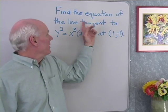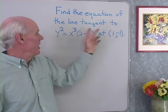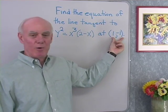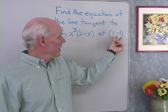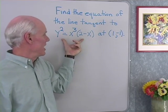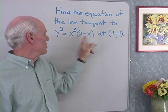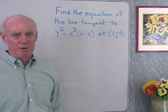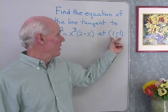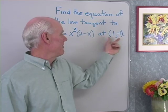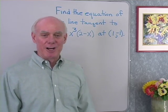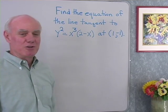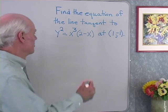Let's try one last problem. We want to find the equation of the line tangent to this graph at the point (1, negative 1). I know that x equals 1, y equals negative 1 satisfies this equation — substituting those values gives a true statement. So I have one point on the graph. Now I want to find the slope of the tangent line, so I need to find the derivative using implicit differentiation.